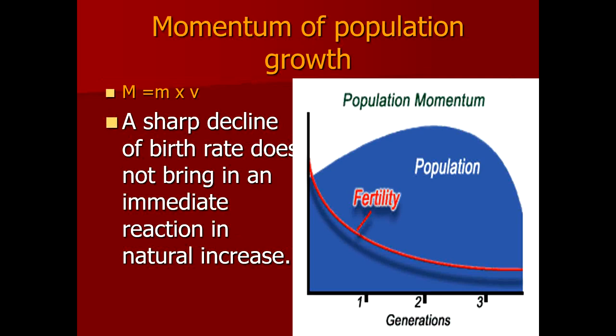It is estimated that a population with a large number of people in the reproductive age group will continue to grow even if rapid family planning services are provided. The mass of the population is such that it will continue to grow regardless, meaning that currently having a large reproductive-age population in Pakistan means population growth cannot easily be halted.